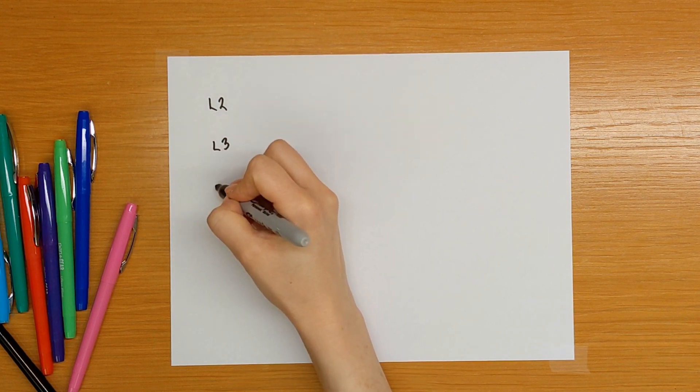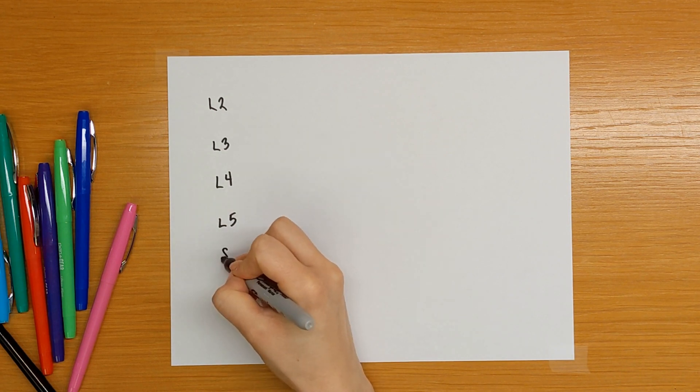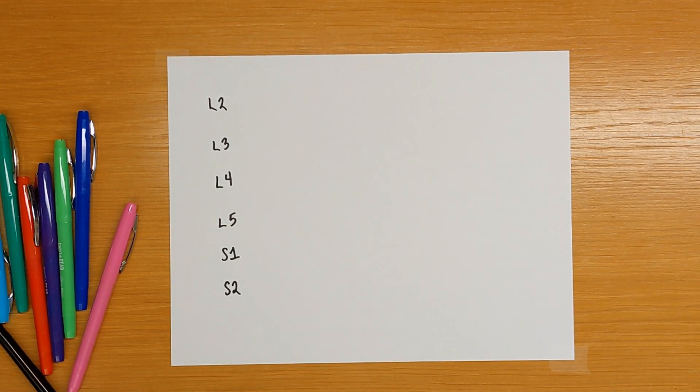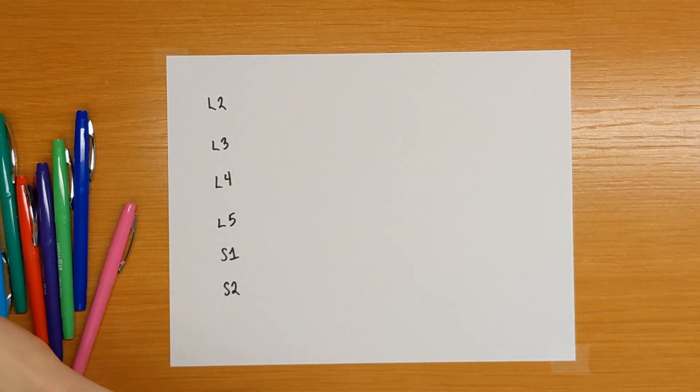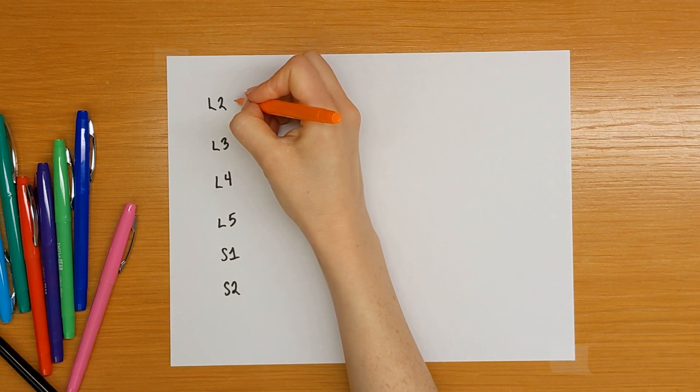L2, L3, L4, L5, S1, S2. Then remembering that those come together and form the lumbosacral plexus. And then we have our nerve branches.